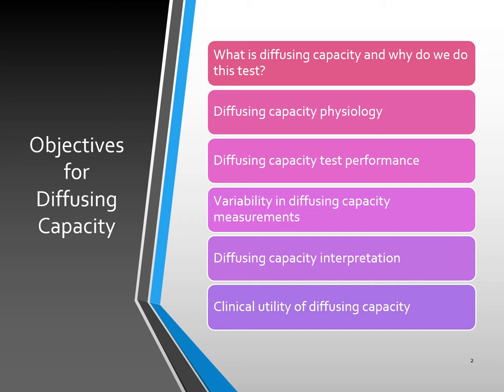Today we're going to talk about what is the diffusing capacity and why we do the test. I'm going to cover the physiology involved, test performance, variability in capacity measurements, how to interpret the results, and most importantly, the clinical utility of a diffusing capacity. There's a lot of information here, and any diffusing capacity test has to be done with spirometry — you just can't do one without the other.